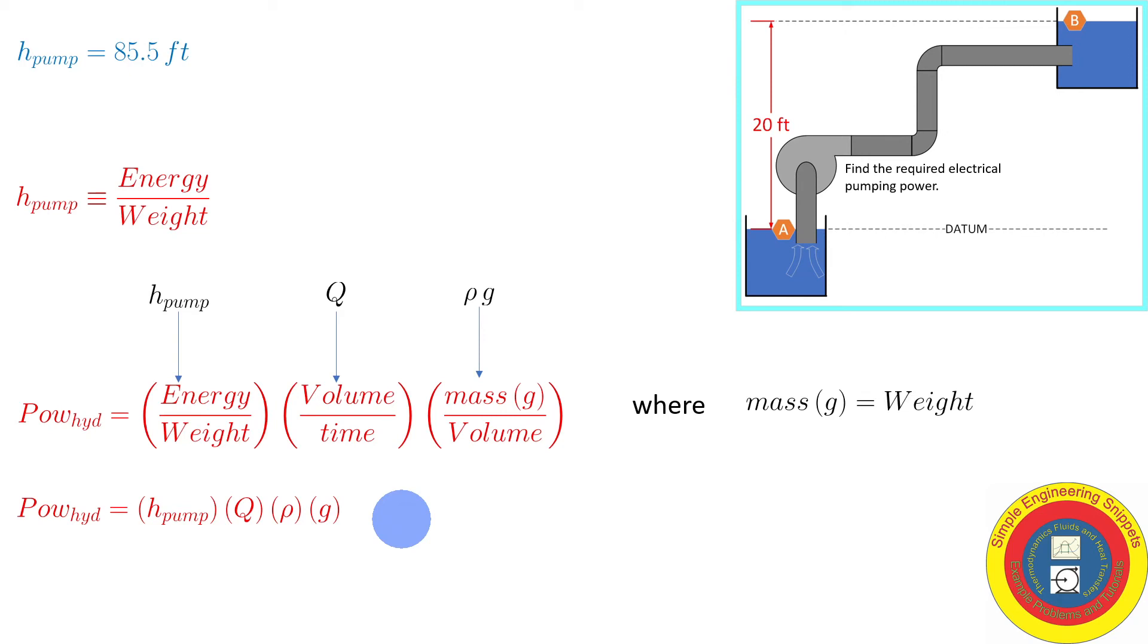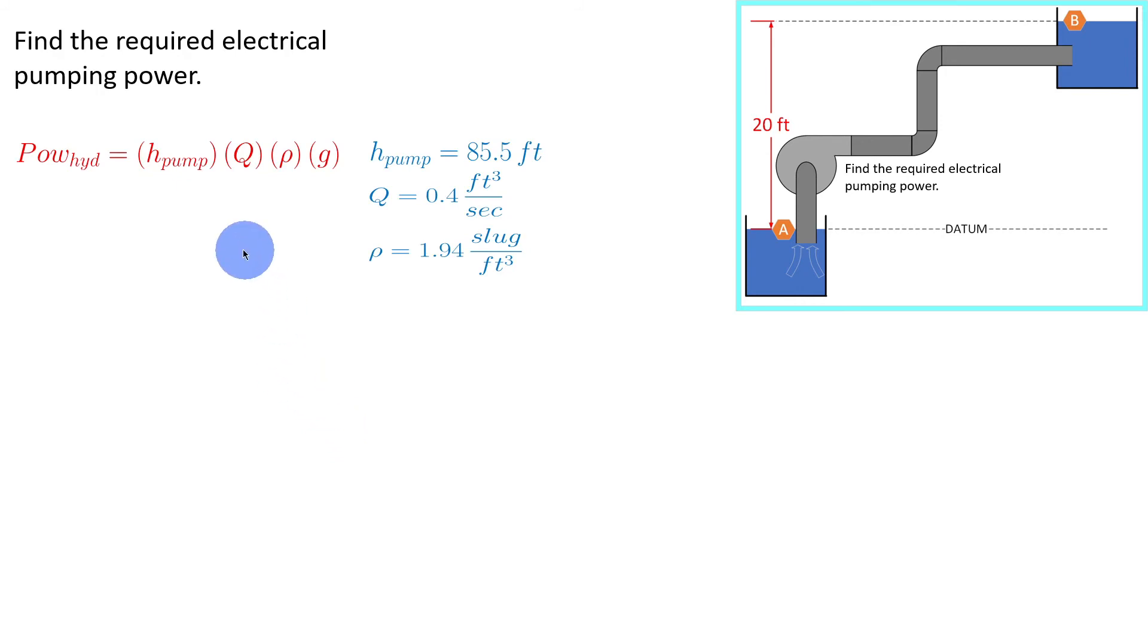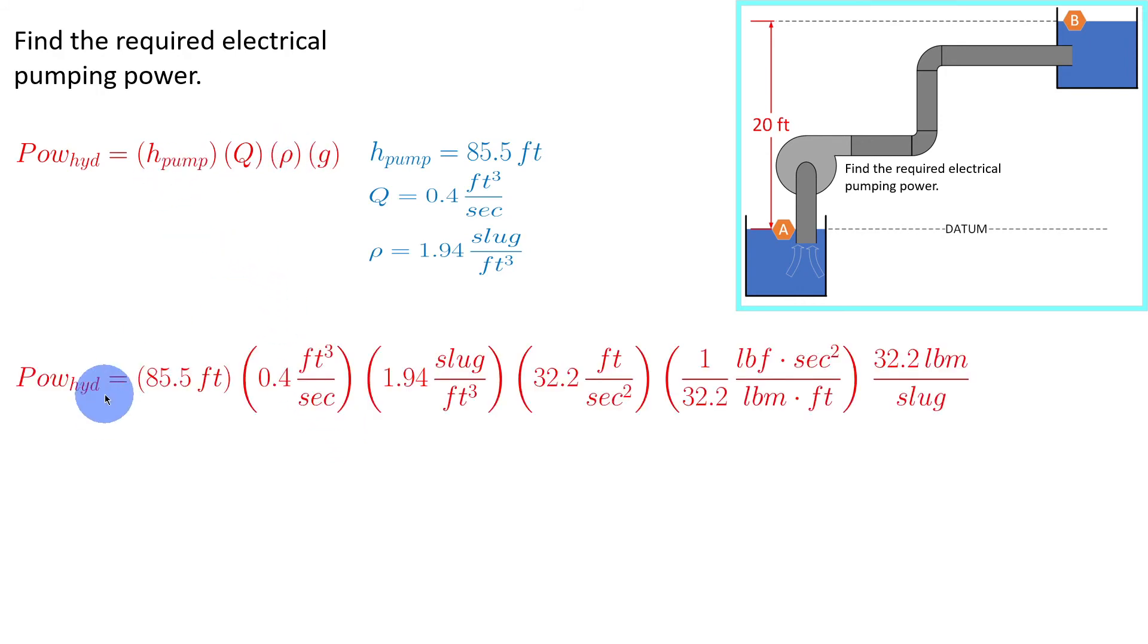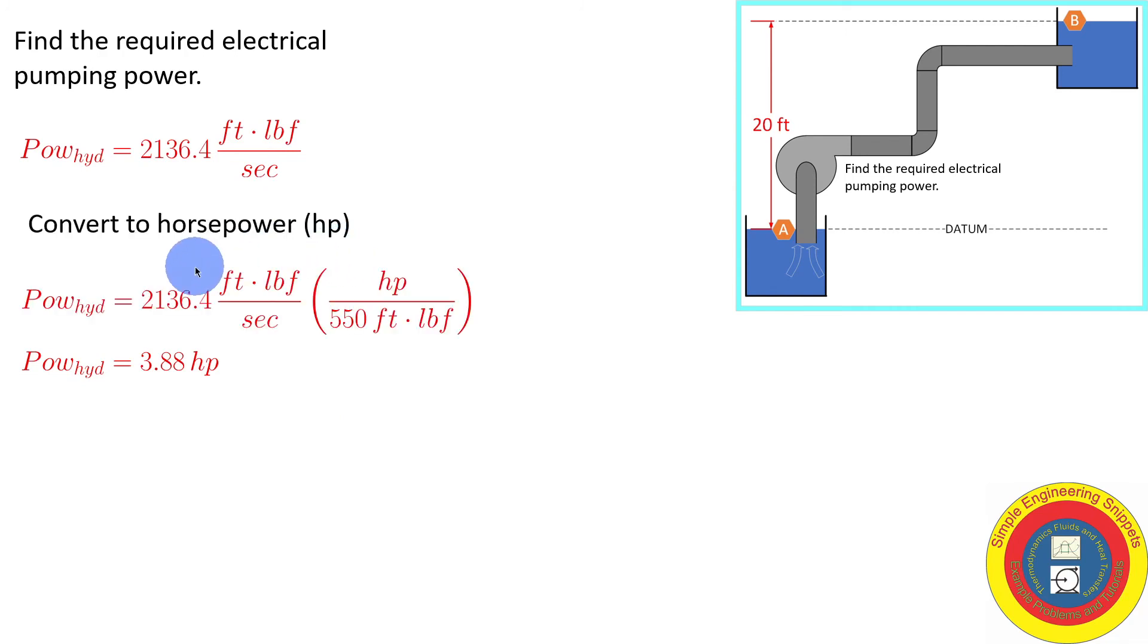Hydraulic power is the energy per time that the pump is adding to the water. This is a fairly straightforward calculation. It's a little messy with dealing with slugs in the G sub C term. But it works out to 2,136.4 foot-pounds force per second. When we deal with pumps, I like to think in terms of horsepower. It comes out to be 3.88 horsepower. That's the hydraulic power, the power that the pump is providing to the fluid.